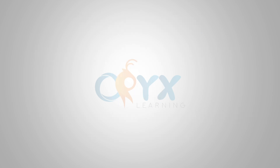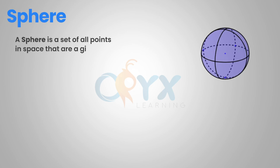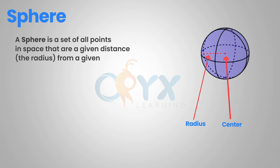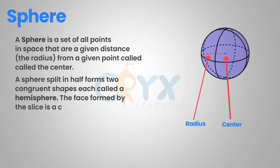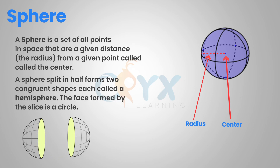So remember: a sphere is a set of all points in space that are a given distance — the radius — from a given point called the center, as we can see in the diagram. A sphere split in half forms two congruent shapes, each called a hemisphere. The face formed by the slice is a circle. If we want to find the volume of a sphere, our formula is v equals four-thirds pi r cubed.